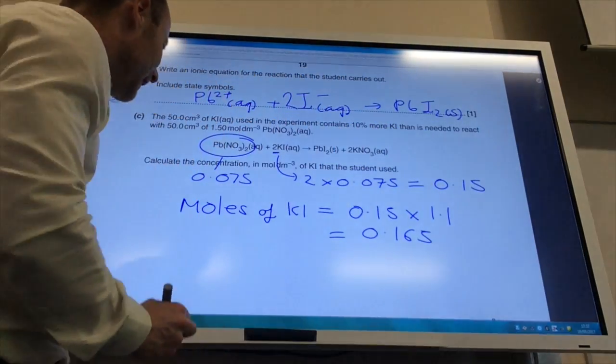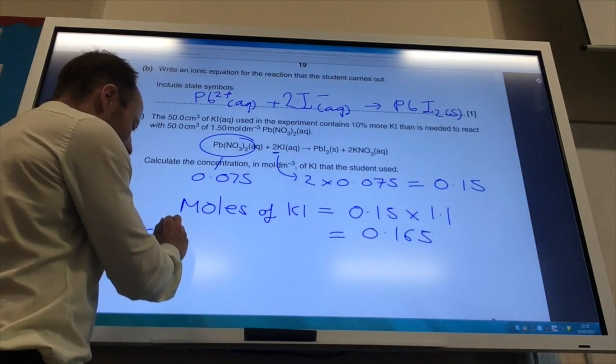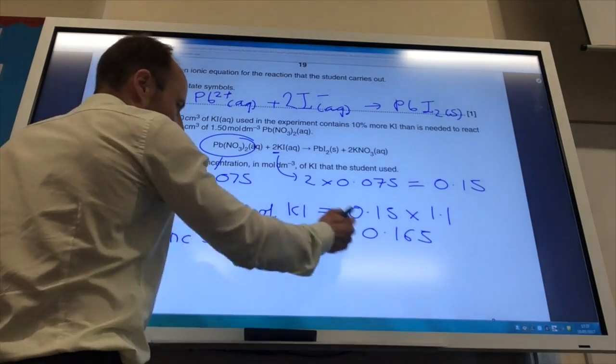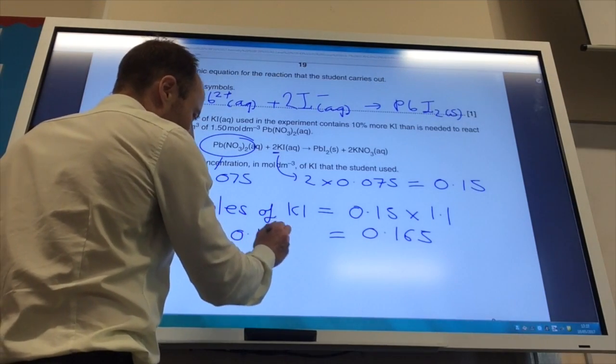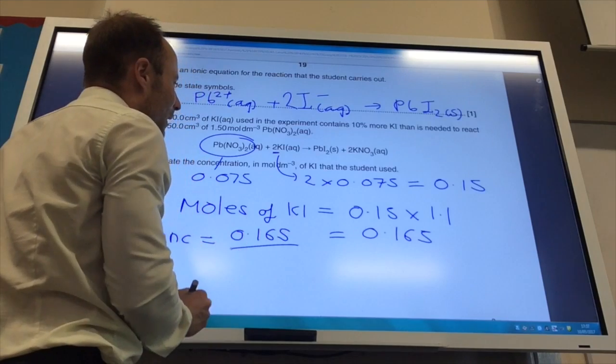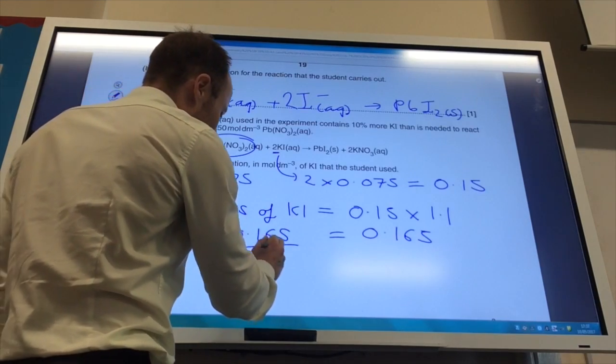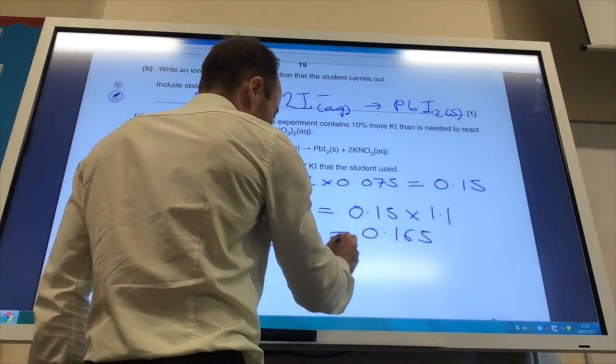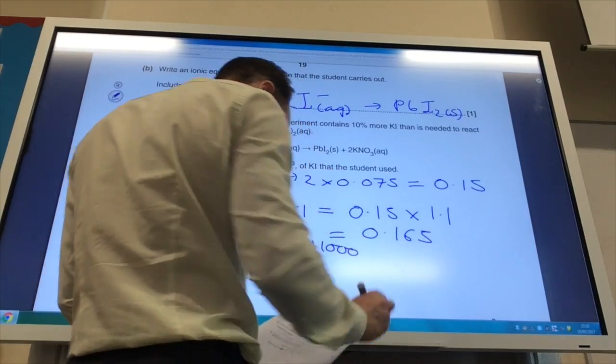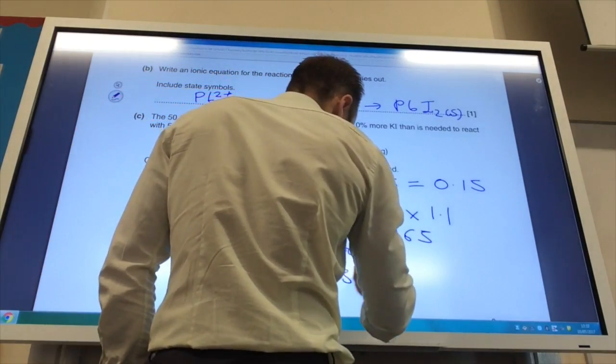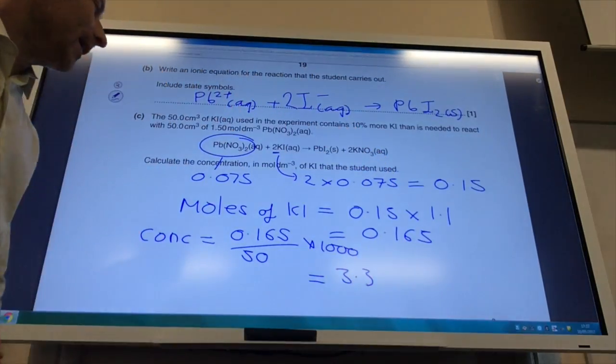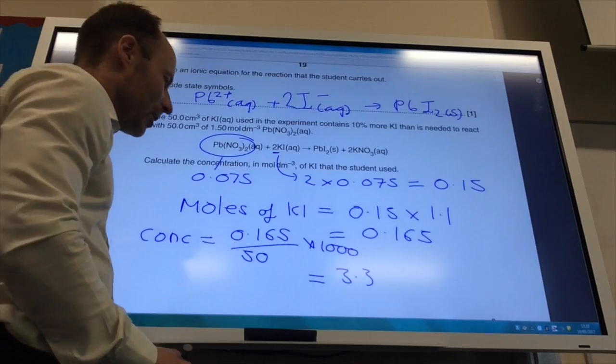And then finally you work out your concentration, which is going to be moles divided by the volume which is 50, times by a thousand, and that gives you a concentration of 3.3 moles per decimeter cubed.